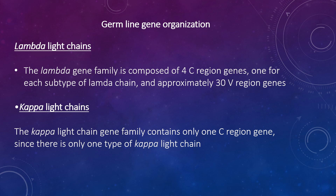Upstream of each of the C-genes there is an additional exon called the J-exon. The L, V, J, and C exons are separated by introns, which are intervening non-coding sequences. The kappa light chain family contains only one C-region gene, which means there is only one type of kappa light chain. There are many V-region genes, approximately 250, each of which has a leader exon and a V-exon. In the gene family there are several J-exons located between V and C genes, and all exons are separated by introns.